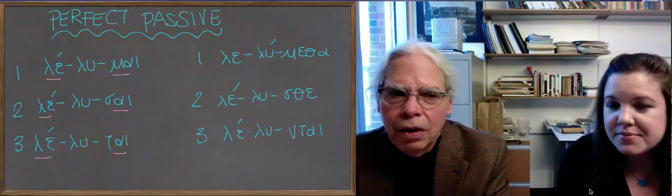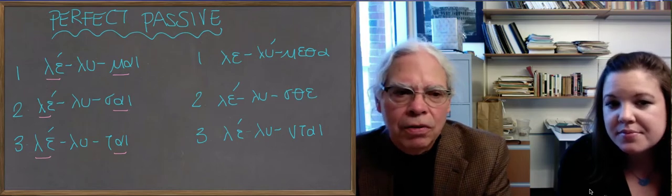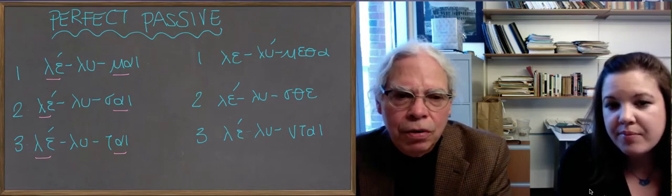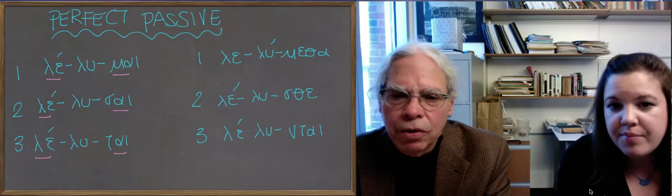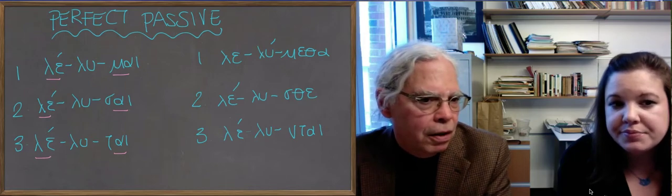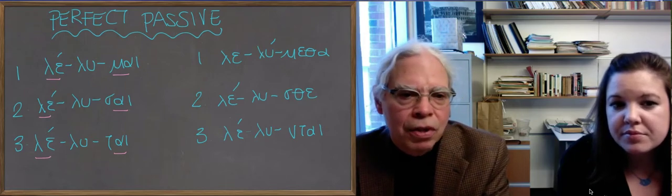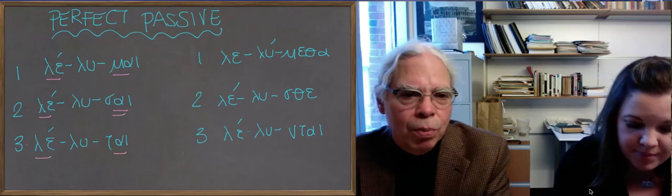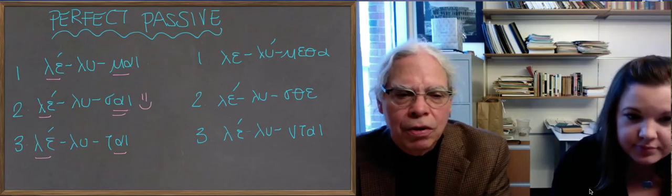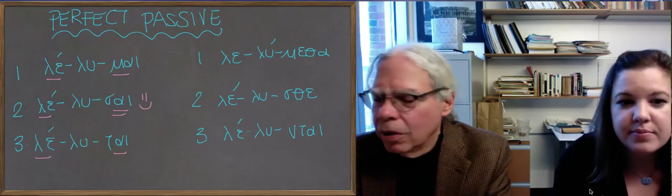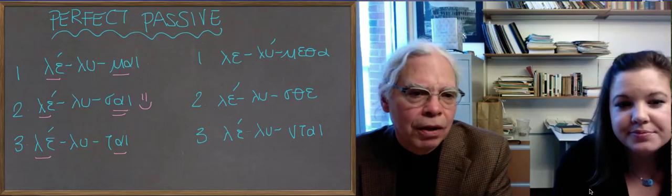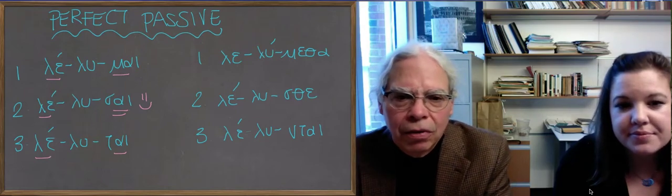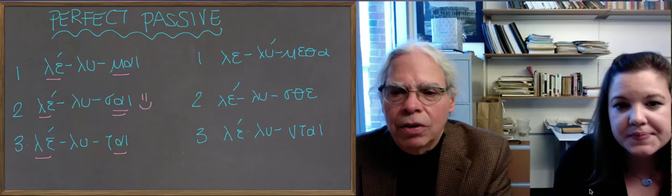And notice the other thing is that in a case like this, because there is no e or o vowel before the second person's singular form, you don't have any contraction. So you actually get to see the sai, and when we get to the pluperfect in a moment, you'll see that the sai remains intact. So it couldn't be more systematic and regular, and consistent with what you would guess it to be.